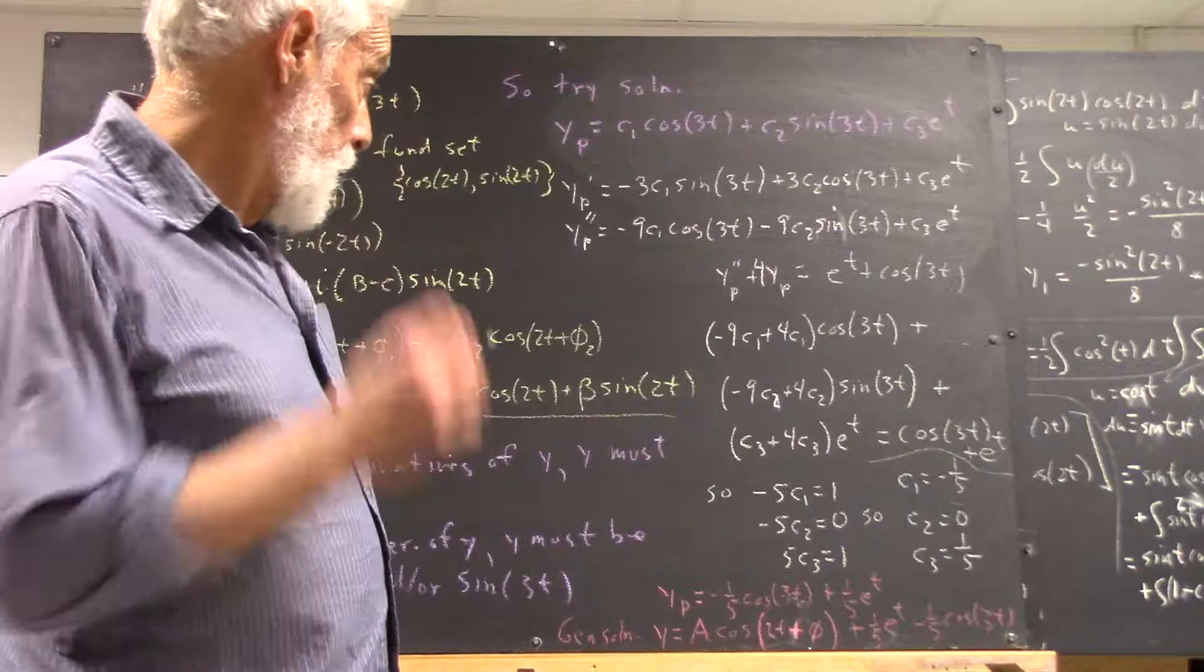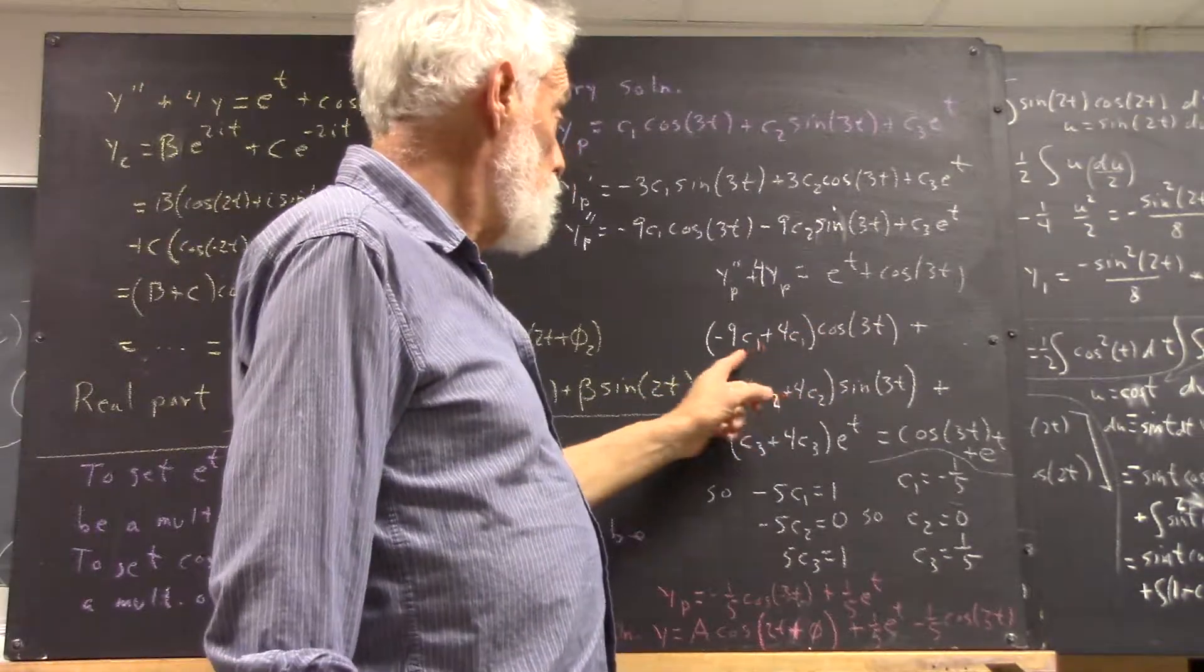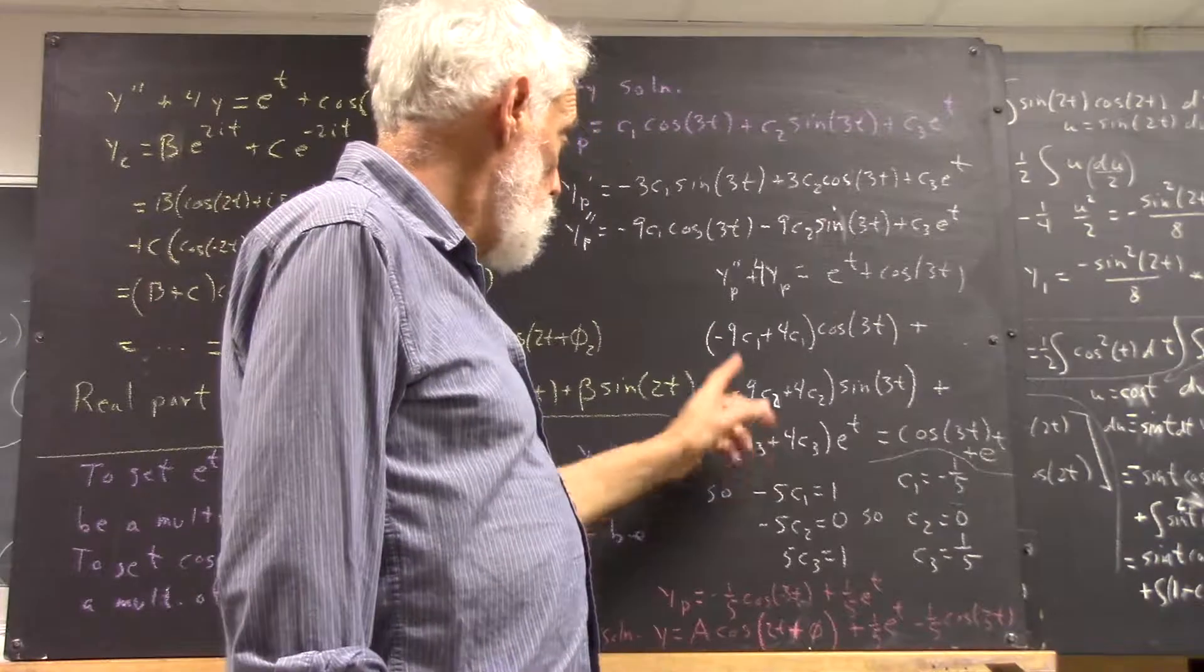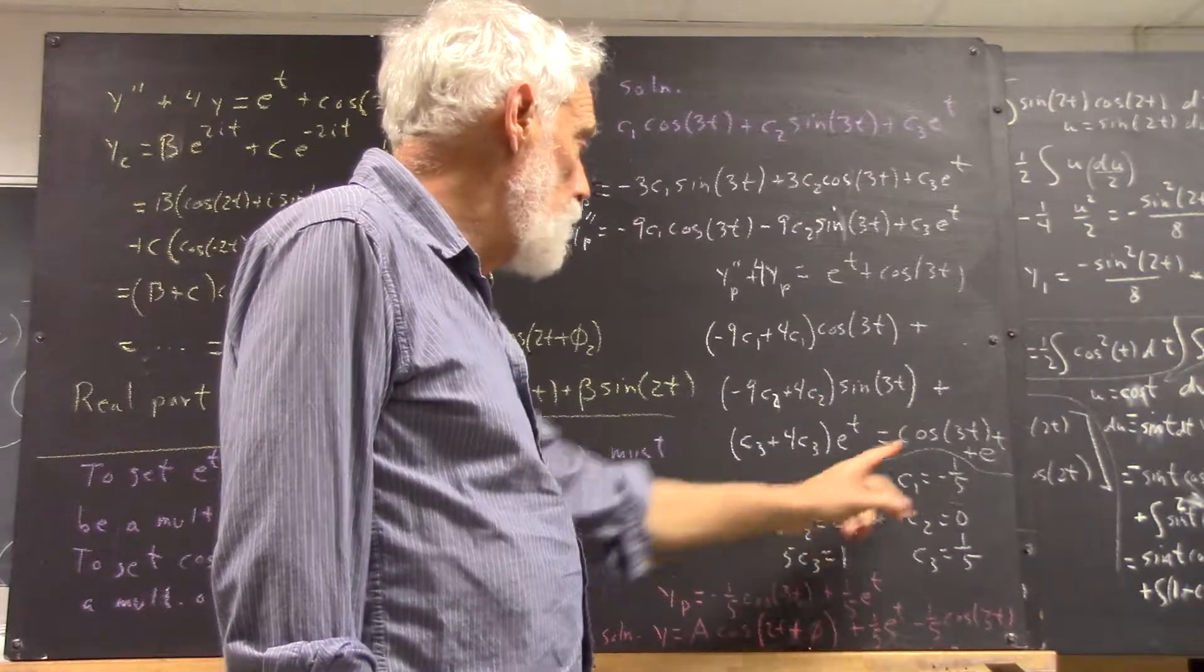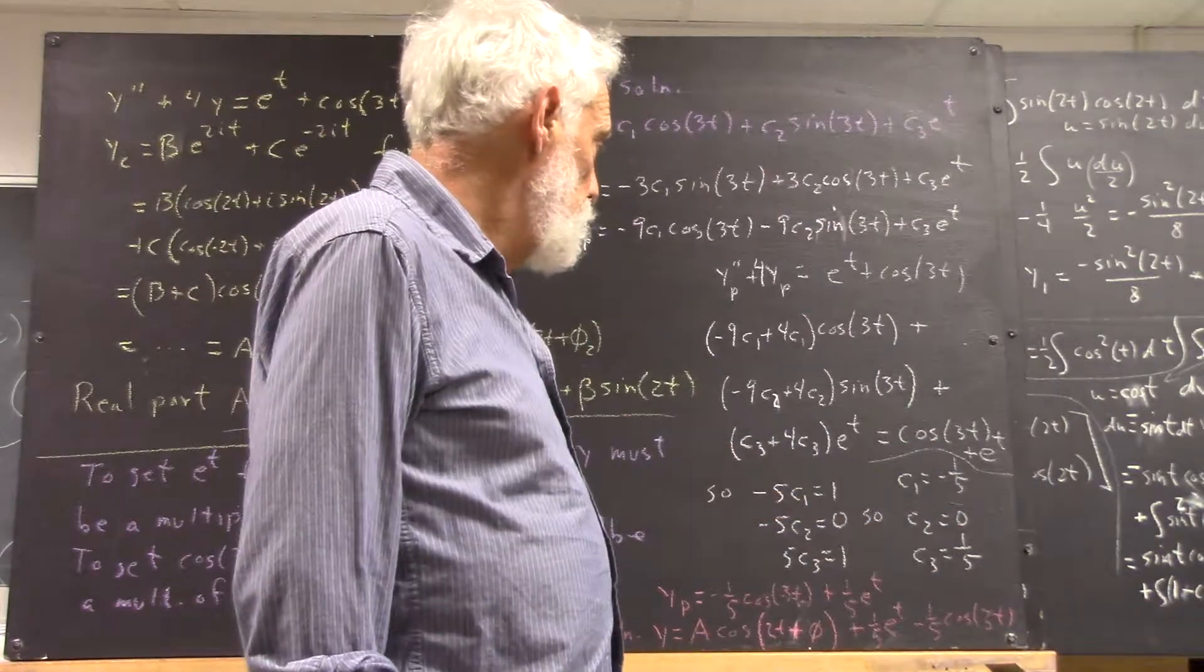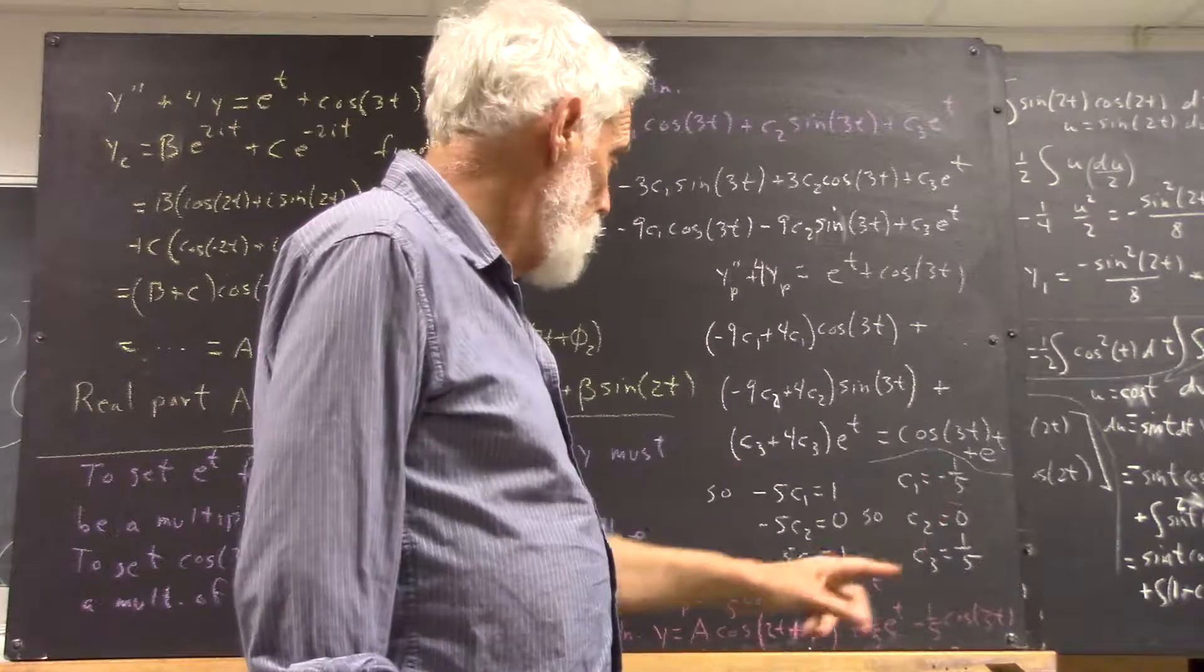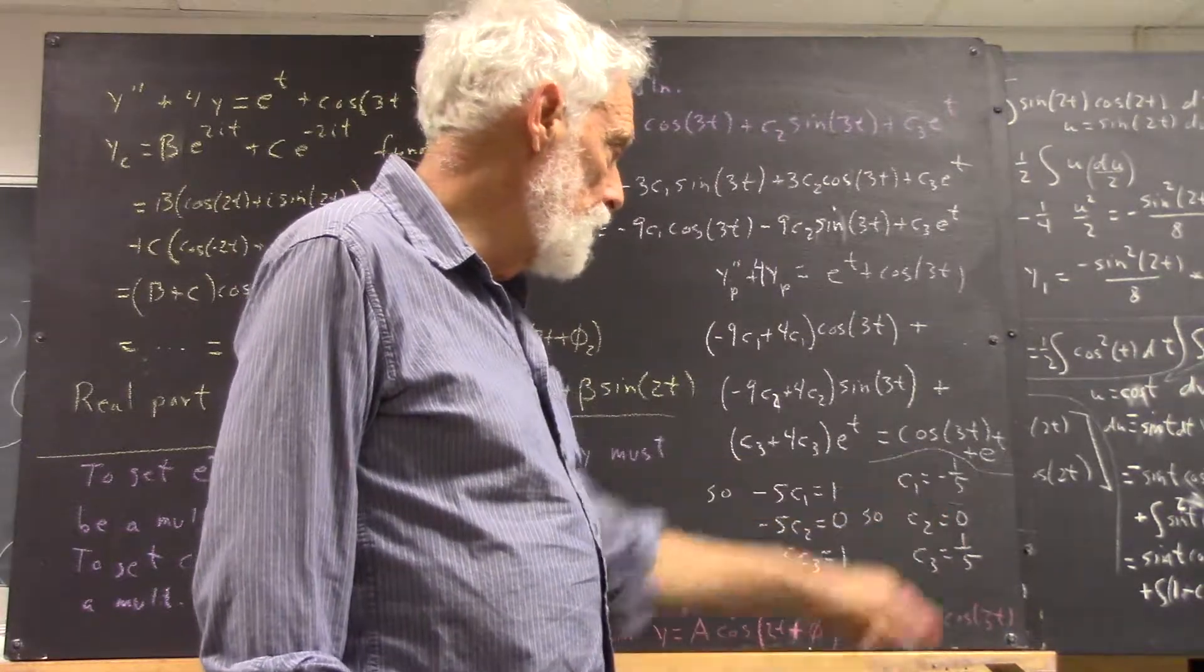The coefficient of cosine of 3t turns out to involve just c1, so we get negative 5c1. What we have to get out of this is cosine of 3t, so whatever is in front of cosine of 3t here has to be 1. So negative 5c1 has to be 1, meaning c1 is negative 1/5.